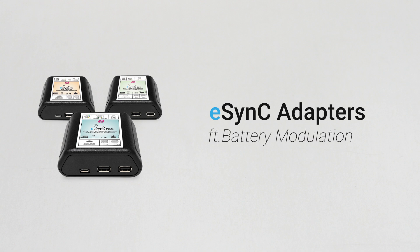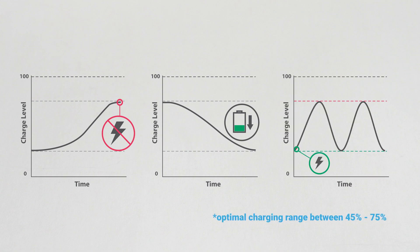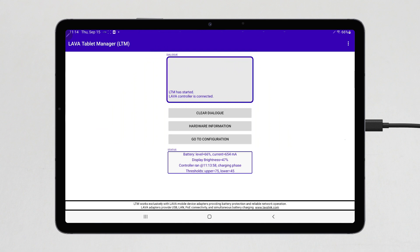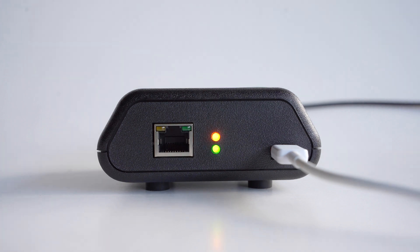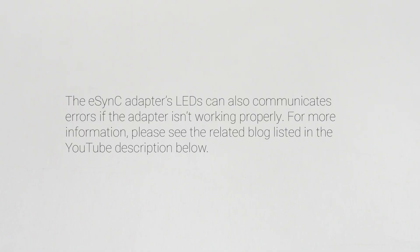Lava's eSync adapters feature battery modulation, which puts the mobile device through a series of charging and discharging cycles to keep its battery at optimum health. The LTM status window will indicate whether the device is in a charging phase or a discharging phase. The yellow LED also reflects its charging state: if the LED is illuminated most of the time but turns off for brief intervals, the mobile device is charging; if the LED is mostly off but occasionally turns on, then the device is discharging. The eSync adapter's LEDs can also communicate errors if the adapter isn't working properly. Please see the related blog listed in the YouTube description below.